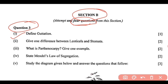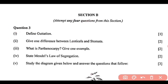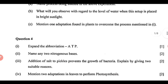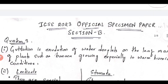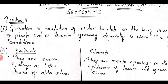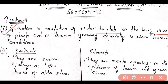Question 3, first question: define guttation. So what is guttation? It is the exudation of water droplets on the leaf margins of plants such as banana, growing specially in warm, humid conditions. So basically it is the loss of water from the leaf margins of the plant.